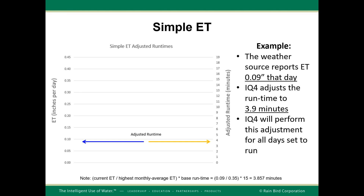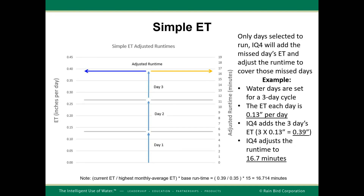IQ4 performs this adjustment for all days the station is set to run. Another example involves a station set to run on a cyclical day pattern with a 3-day cycle. Simple ET will add the missed station runtimes from non-watering days and irrigate for that combined amount of time. In this example, the ET for each missed day was 0.13 inches per day. IQ4 adds the ET from the missed days to total 0.39 inches. Since 0.39 inches is above the base ET of 0.35 inches, Simple ET automatically adjusts the station runtime to 16.7 minutes.